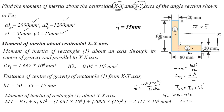Now calculate IG about the XX axis using BD³/12. For section 1: B = 20, D = 100, giving IG1 = 1.667×10⁶ mm⁴. For section 2: B = 60, D = 20, giving IG2 = 0.04×10⁶ mm⁴.